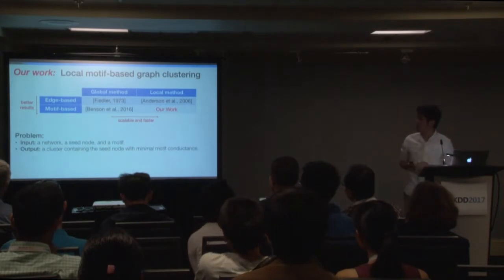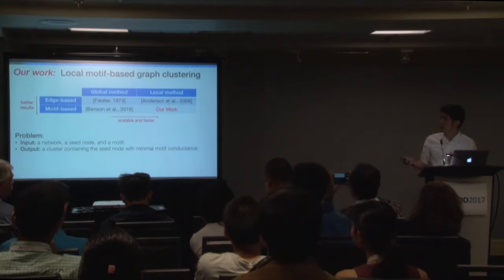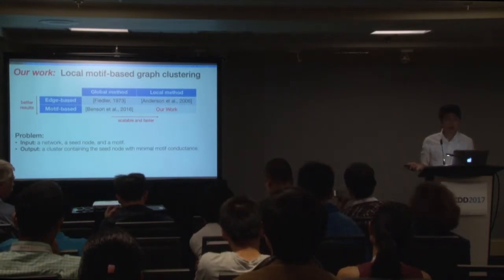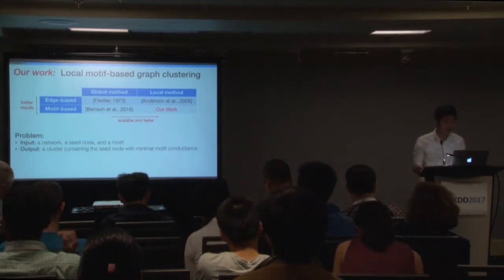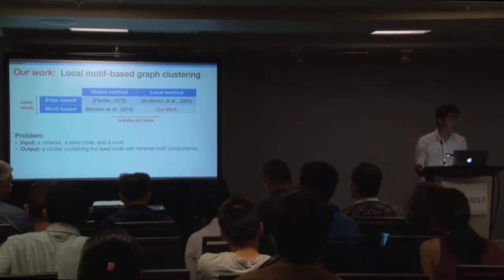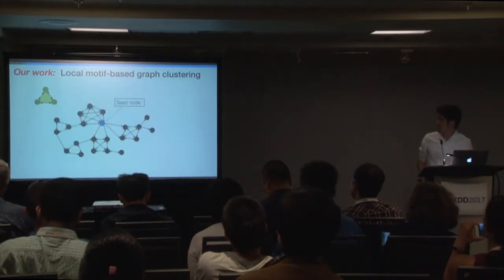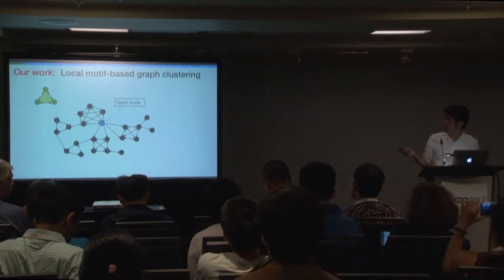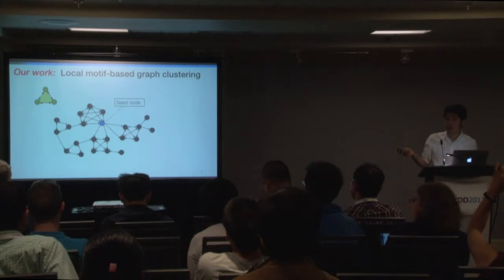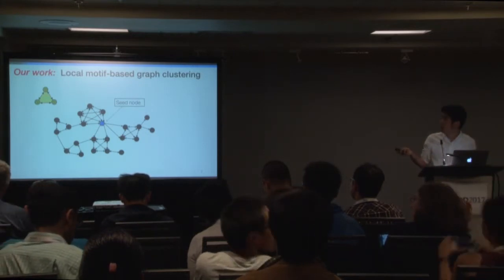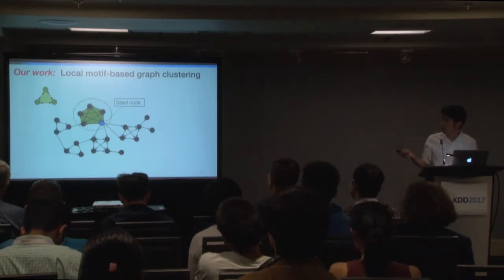As a formal definition, our work is about: given a network, a seed node, and a motif, we output a cluster containing the seed node with minimal motif conductance. As a brief visualization, taking this network with a given seed and the triangle with bidirected edges as the motif, we find the motif instances and output this cluster.